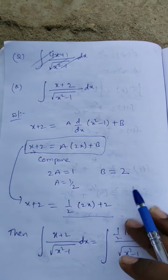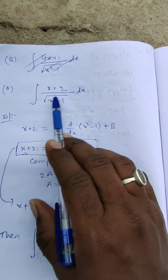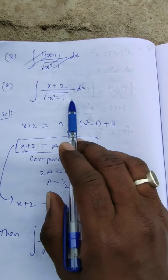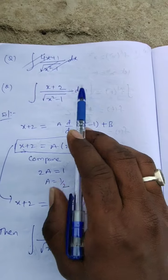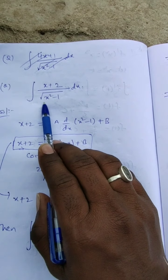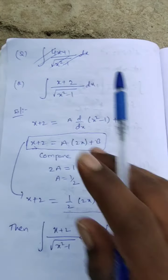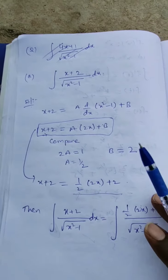Hey students, let us start the next question: integration of (x+2) upon under root of (x² - 1) dx. This is of the form linear by under root of quadratic.